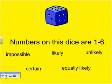What is the probability of rolling a number less than six? The probability of rolling a number less than six is likely. We have five out of six chances that we will roll a number less than six. What is the probability of rolling a number between one and six? It is almost certain that we will roll a number one through six, because all of the numbers on this dice are one through six.